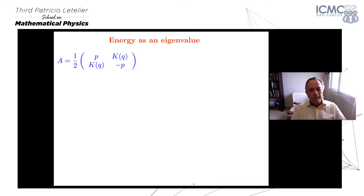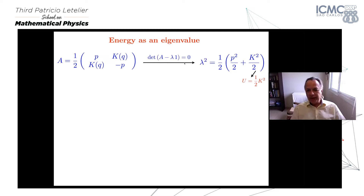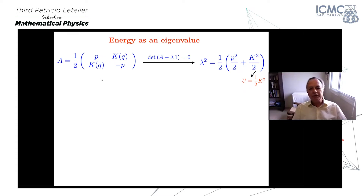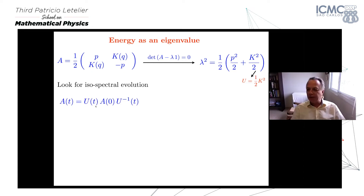Using the work done along the path that solves Newton's equation — which equals the variation of kinetic energy — and the fact that the force is conservative, you get conservation of mechanical energy. Now let's try to get this energy as an eigenvalue. Take this matrix: p is the momentum of the particle in one dimension, and k is a function of the coordinate q. The eigenvalues of this matrix give p²/2 + k²/2, and if you take k²/2 as the potential, that's the energy.